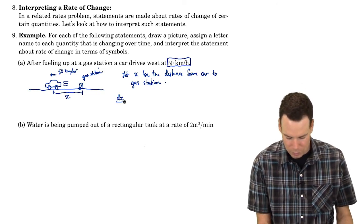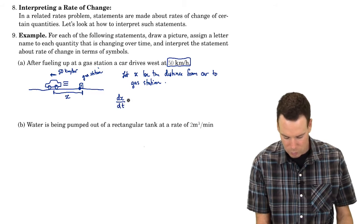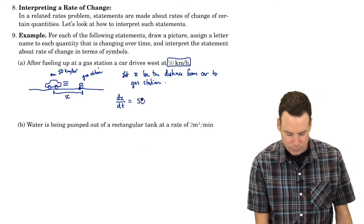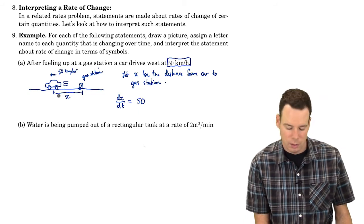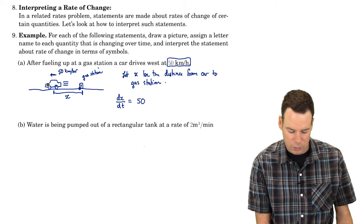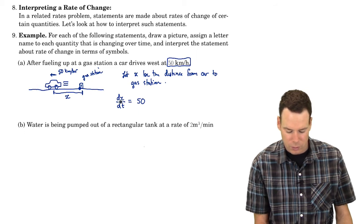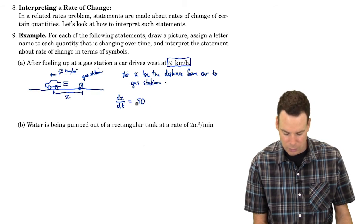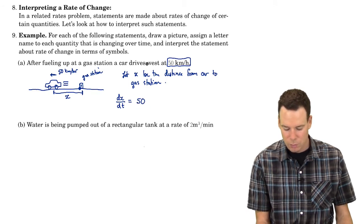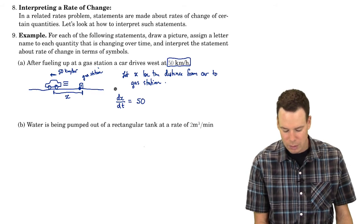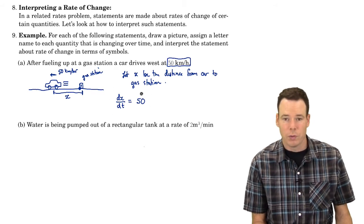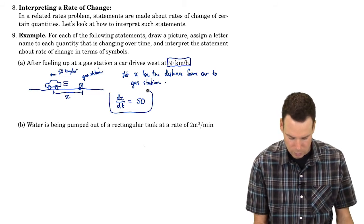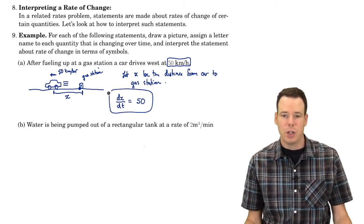So 50 kilometers per hour is dx/dt, equal to 50. The thing to note is that x is increasing — as the car moves, it's getting further and further away — so the derivative is positive 50. Sometimes we'll have to make that decision when given a rate of change: interpret it in terms of the derivative of the variable we've defined, and decide whether it's negative or positive.